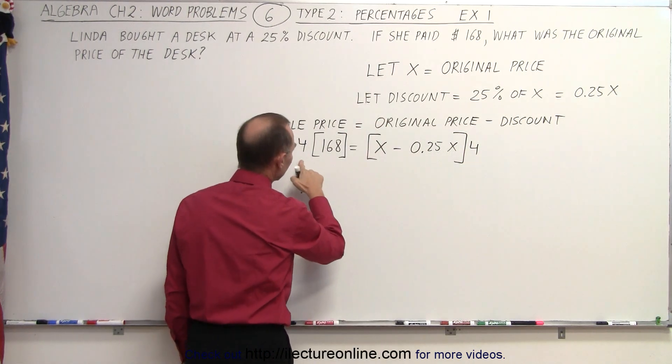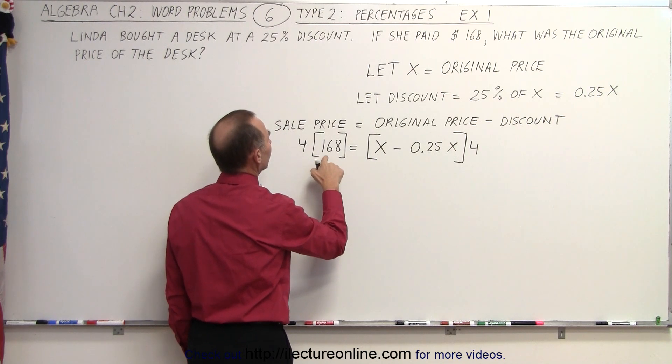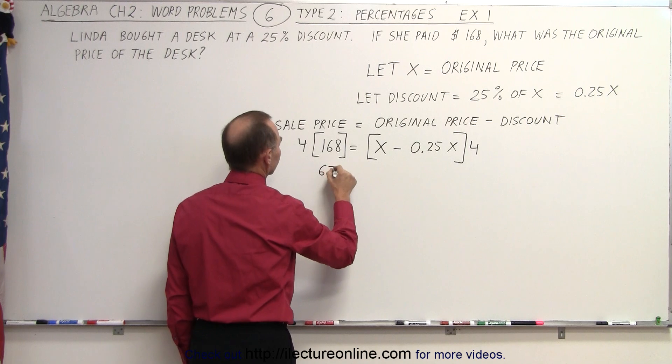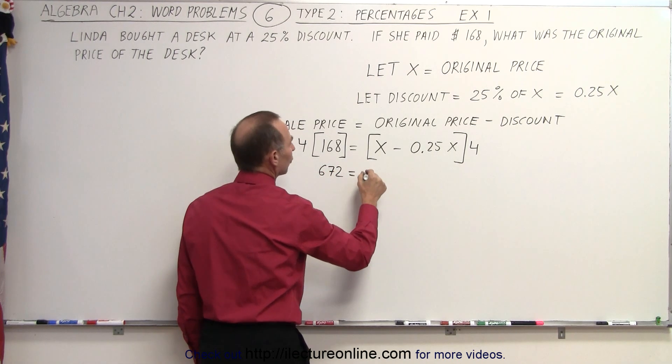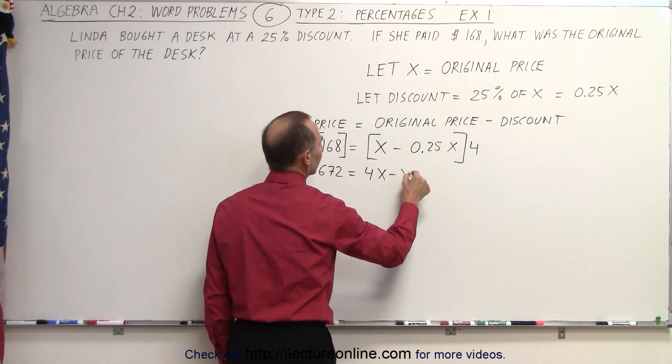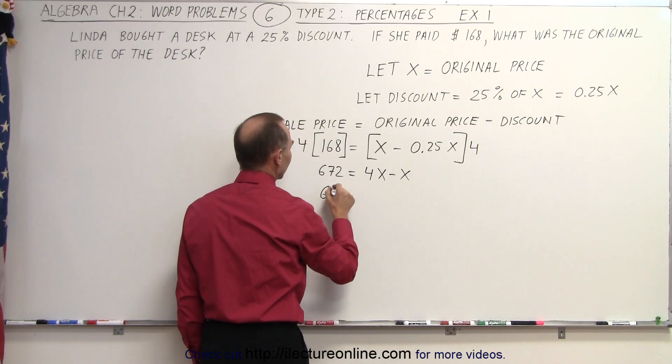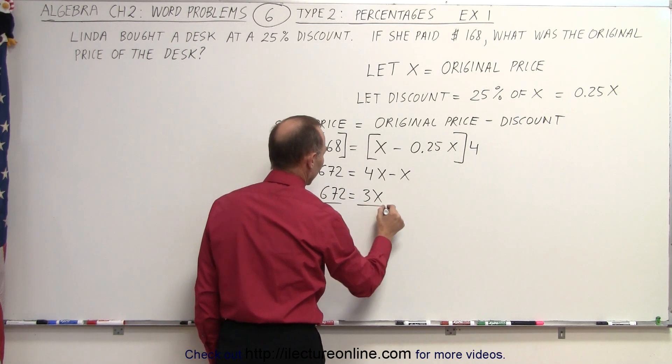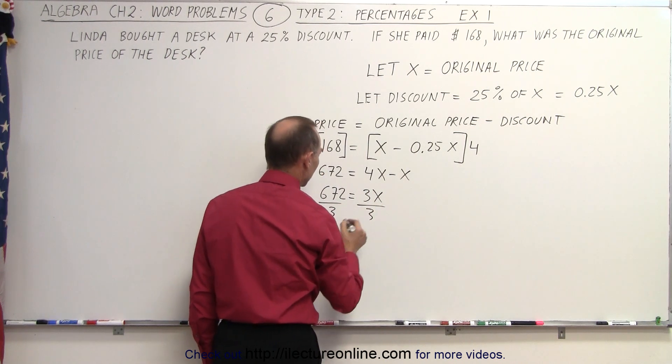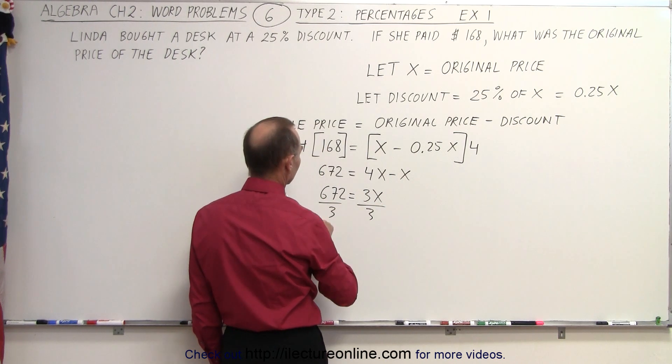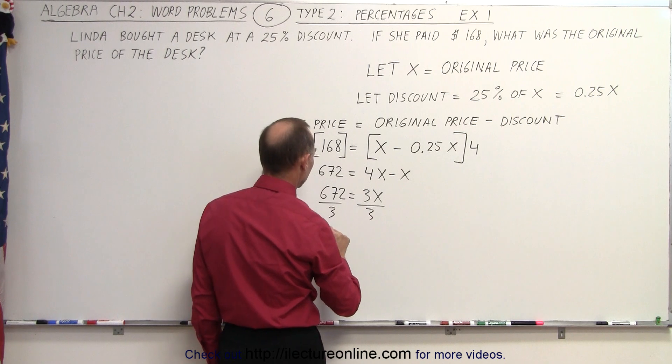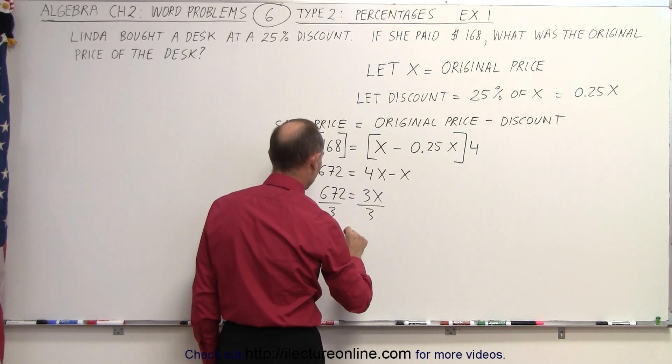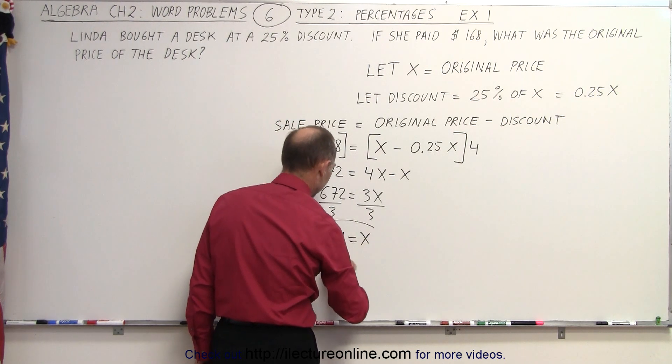When I do that, 4 times this, that would be 400, 640, and that would be 672 is equal to 4x minus x. That means that 672 is equal to 3x. So now we divide both sides of the equation by 3. When we do that, we get 3 goes into that, looks like 224 equals x. There we go.